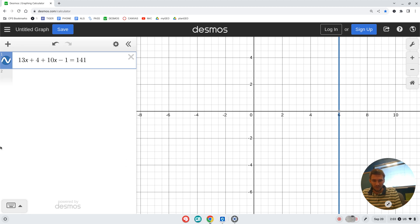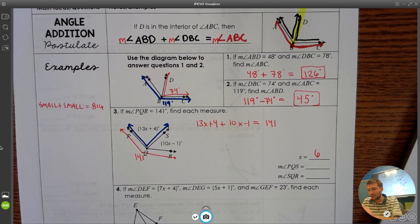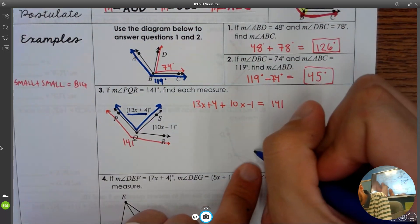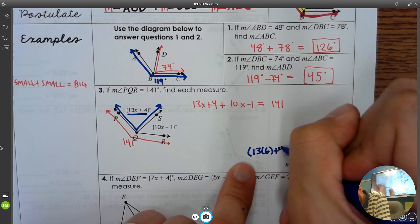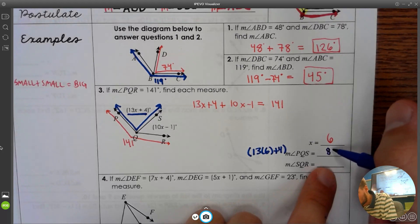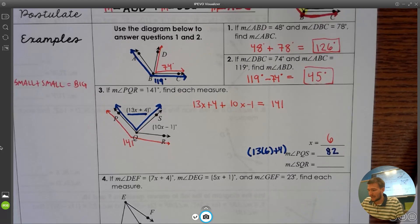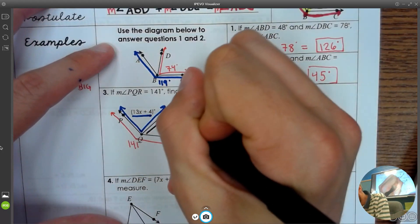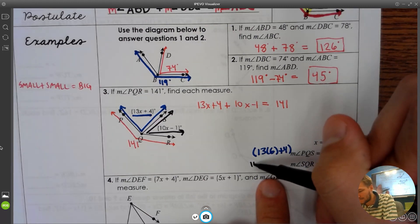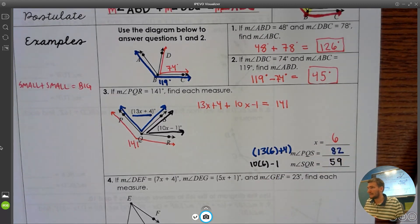13 times 6 is going to be 78 plus 4 is going to be 82. And then we can do the other one. Again, just plugging it in. Did anybody get the measure of angle SQR? 59. And that would just be 10 times 6 minus 1.